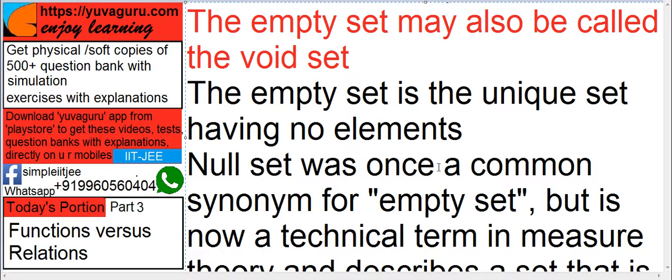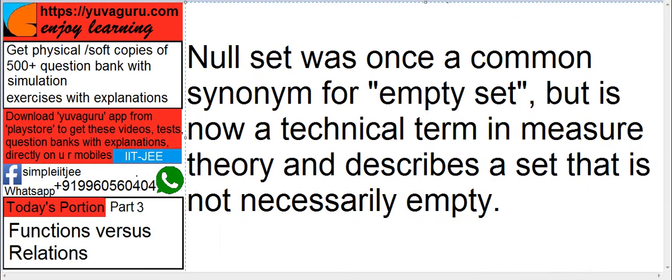Null set was once a common synonym for empty set. Means earlier it was called as a null set. But nowadays, this null set has been removed and it's called as void set. But it is now a technical term in measure theory and describes a set that is not necessarily empty. This we are describing about null set.